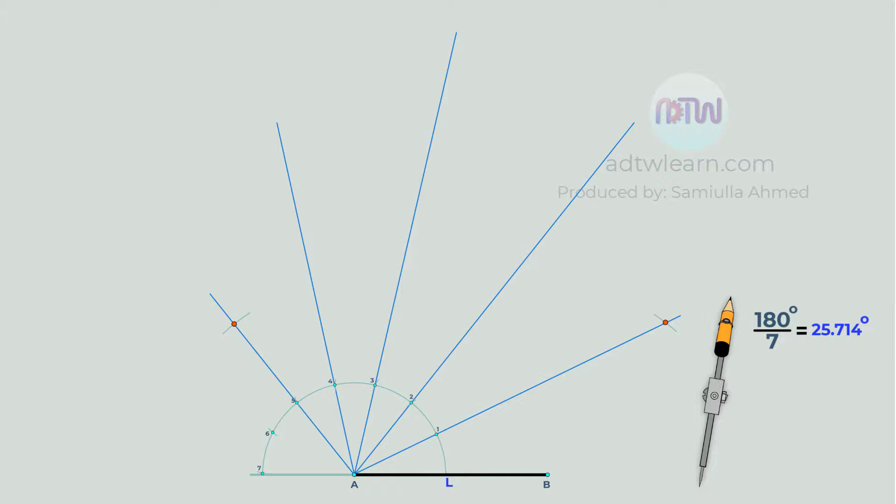Next, place the compass at these points and cut arcs on the line passing through points 2 and 4. And using either of these points as a center, cut an arc on the line passing through point 3.